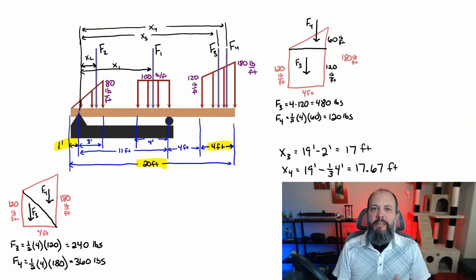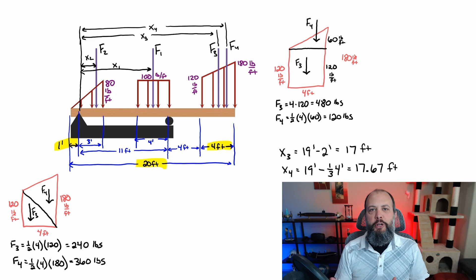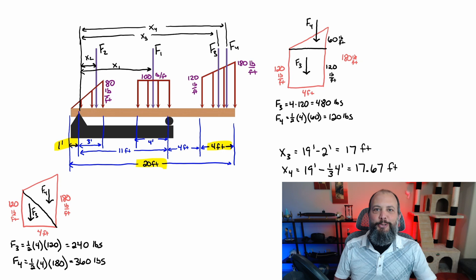Since the entire wood beam is 20 feet long, this means the right-hand side of the trapezoid is 19 feet from the pin. Since the trapezoid has a base of 4 feet and half of that is 2, you get 17 feet to the center of the rectangular portion of the trapezoidal distributed load, labeled as X3.